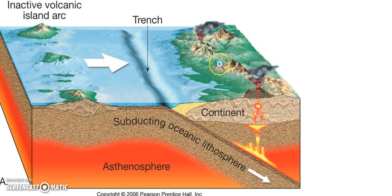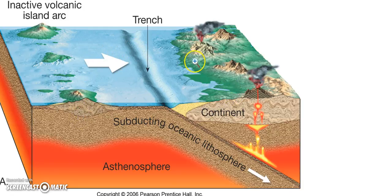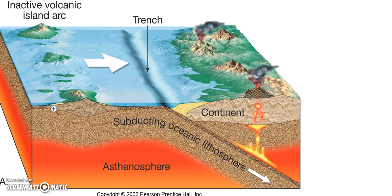Here we have an ocean-to-continent convergent boundary. You have your oceanic plate here and your continental plate here. The two plates are going to come at each other, and at the point of collision, the oceanic plate, due to the fact that it's made of more dense materials, is going to subduct underneath the continental plate.